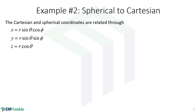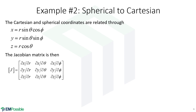A second example: spherical to Cartesian. The first thing we need are the equations for the coordinate transform — X, Y, Z with respect to our spherical coordinates R, theta, phi — and these three equations should be familiar. Next we define our Jacobian. Notice, again, no scale factors, because we're in X, Y, Z — these are Cartesian coordinates, so all those scale factors are one.